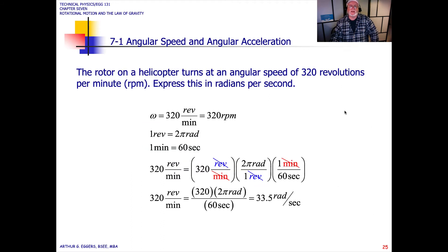Let's take an example. The rotor on a helicopter turns at an angular speed of 320 revolutions per minute. Express this in radians per second. We want to go from 320 revolutions per minute to radians per second. We define the angular velocity omega equals 320 rpm. One revolution is 2 pi radians.